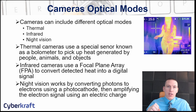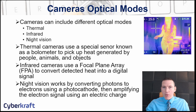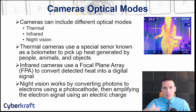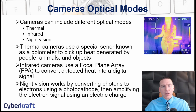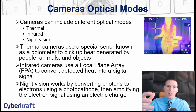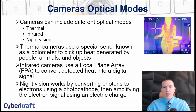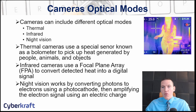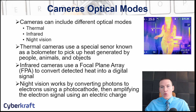Thermal cameras use a sensor called a bolometer to pick up heat generated by humans, buildings, reflected heat, or engines. The bolometer captures and displays that heat. Infrared cameras use a different type of sensor called a focal plane array, or FPA, and convert that heat into a digital signal. Infrared cameras can be black and white — with white being hot and black being cold — or sometimes in color. A forward-looking infrared FLIR image shows heat in oranges and reds, and cold in blues and purples.